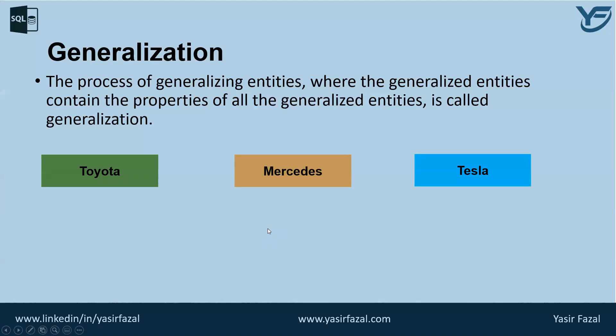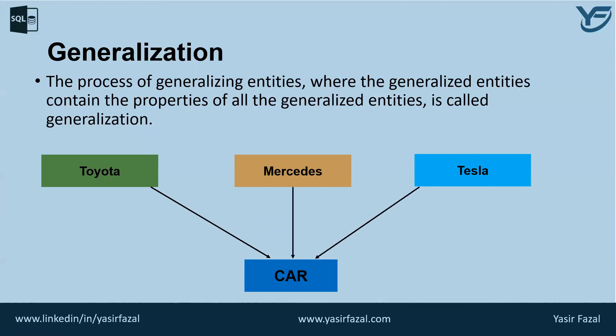For example, I have Toyota, Mercedes, and Tesla. What is actually common in them? Because these are basically cars. So when I actually combine them, I will get a superclass called car. This is something which is actually going to happen in the database as well — if I have entities like Toyota, Mercedes, and Tesla, I can actually generalize them and put them into one superclass named car.